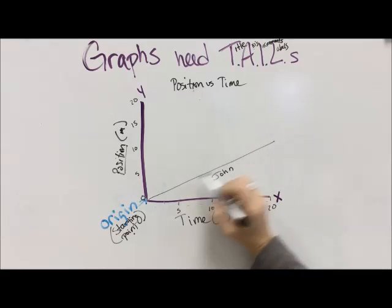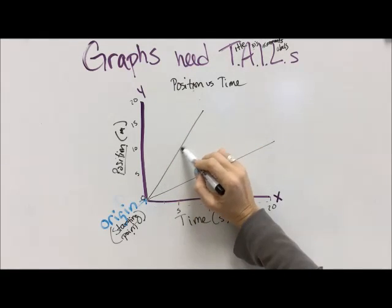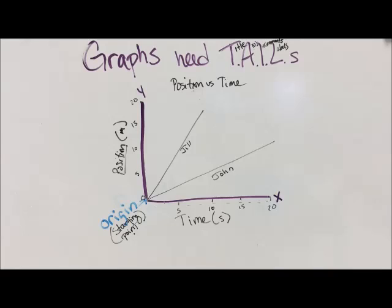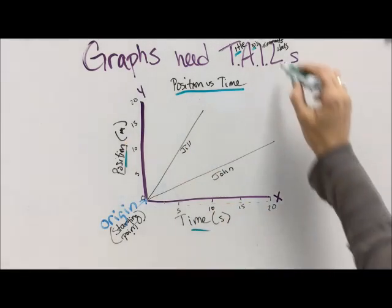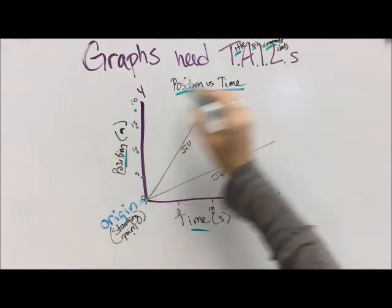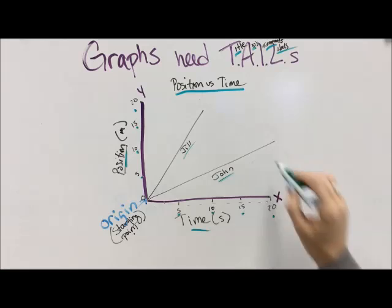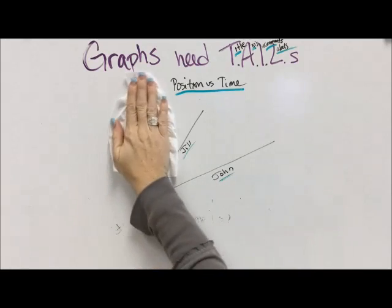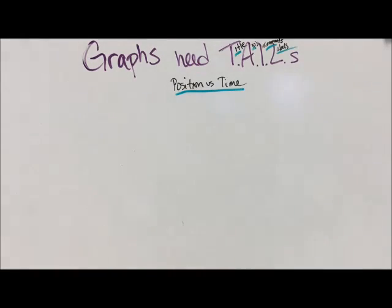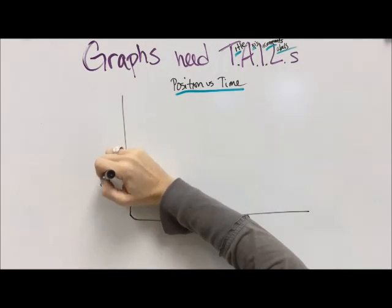And then for your labels, that's what we put on lines to show what those things mean. Like if we're comparing John and Jill, then we can label those things. So remember, you always need to have your tail: Title, Axis, Increments, and Labels. That way people know what the heck they're looking at when you make a graph. And when you look at graphs that are missing these things, it's usually really hard to understand what that graph is even trying to get across.